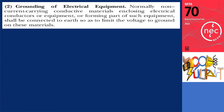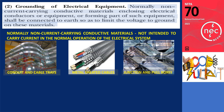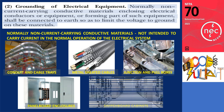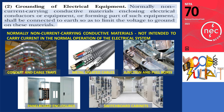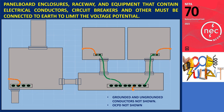Section 250.4A2 — Grounding of Electrical Equipment — states that normally non-current carrying conductive materials enclosing electrical conductors or equipment, or forming part of such equipment, shall be connected to the earth to limit the voltage to ground on these materials. These normally non-current carrying materials include metal conduits, metal-sheathed cables, junction boxes and pull boxes, panelboard enclosures, switchboard cabinets, and cable gutters. Their primary purpose is to provide protection and containment for insulated conductors, overcurrent protective devices, and other electrical accessories.